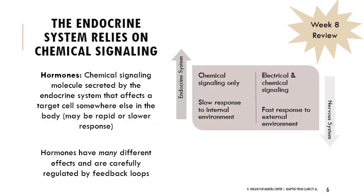The endocrine system is about chemical signaling within our body - generally a slow response with carefully controlled feedback loops to changes in the internal environment. The nervous system involves electrochemical signaling, both electrical and chemical, which has a lot to do with the movement of ions across a membrane. We think about concentration gradients and measure those charges. This is more of a fast response to changes in our external environment.